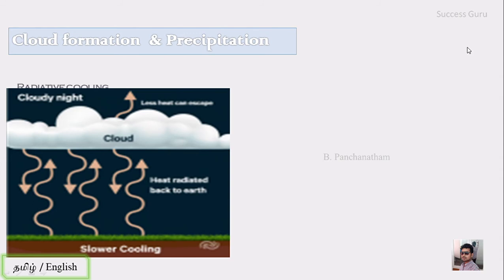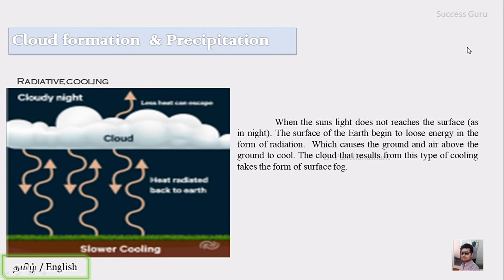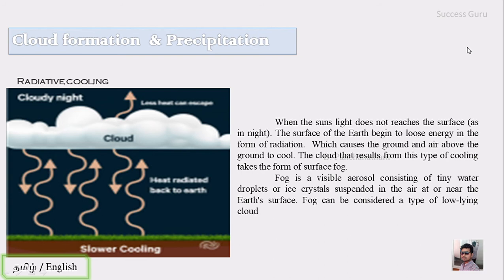The next one is radiative cooling. When sunlight does not reach the surface, like at night, the earth's surface begins to lose energy in the form of radiation, causing the ground and air above to cool. The cloud resulting from this type of cooling takes the form of surface fog. When sunlight is not reaching the surface, the heat energy stored in the earth's surface is released as radiation, causing cooling of the surface and nearby wind, leading to cloud formation felt as fog during winter climate. Fog is a visible aerosol consisting of tiny water droplets or ice crystals suspended in the air at or near the earth's surface. Fog can be considered a type of low-lying cloud.